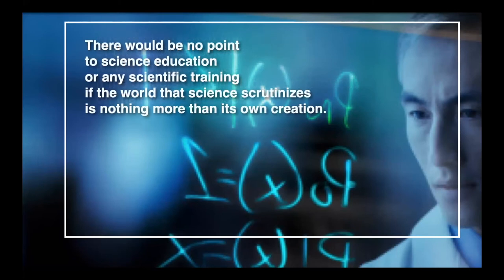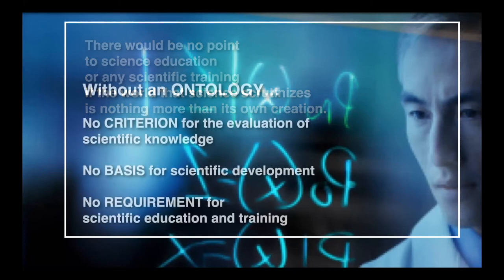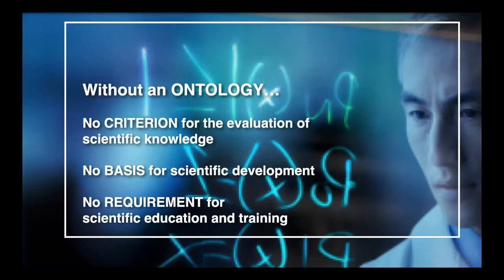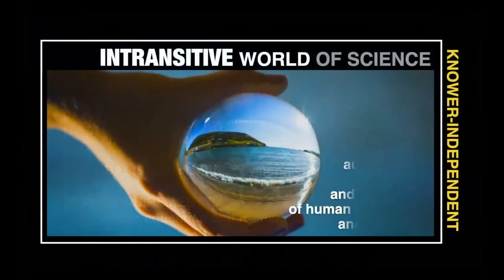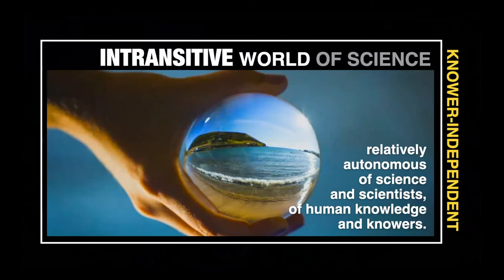The self-correction characteristic of the empirical sciences would not make sense if the object of their studies were merely dependent on their own processes. Without an ontology, there's no criterion for the evaluation of scientific knowledge, no basis for scientific development, and no requirement for scientific training. Roy was able to clear the ground and clarify why it makes sense for the world to be intransitive — and you're aware there have been many debates about whether the world is constructed.